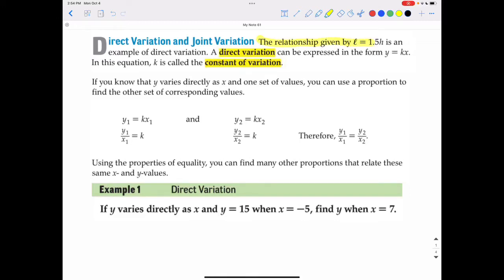The relationship given by L equals 1.5H is an example of direct variation. Direct variation can be expressed in the form of Y equals KX. In this equation, K is called the constant of variation.